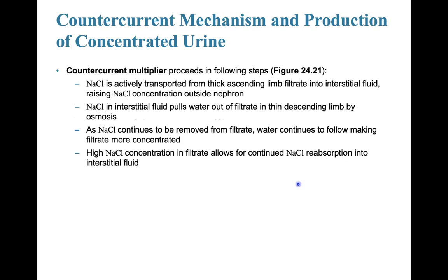The counter current multiplier proceeds in the following steps. Sodium chloride is actively transported from the thick ascending limb filtrate into the interstitial fluid, raising sodium chloride concentrations outside the nephron. Sodium chloride in the interstitial fluid then pulls water out of the filtrate in the thin descending limb by osmosis. As sodium chloride continues to be removed from the filtrate, water continues to follow, making the filtrate more concentrated.